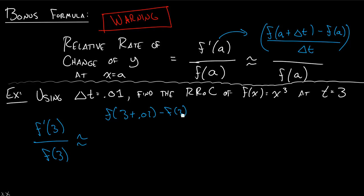minus f(3) divided by 0.01. So this is my approximation for f'. Notice I don't have f' anymore, this is all f's, and I'm dividing that by f(3). At this point we can just plug this into our calculator.